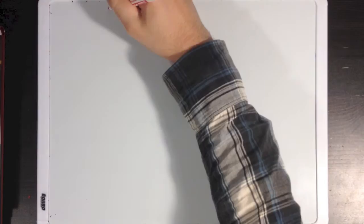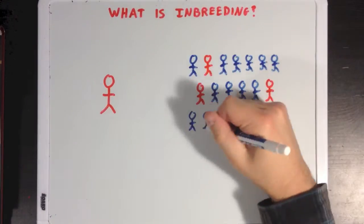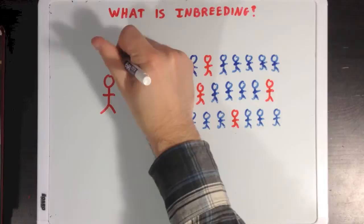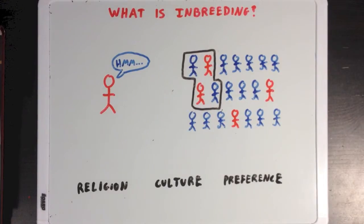So what is inbreeding exactly? Well, inbreeding is when people in a population will selectively have offspring with a certain smaller group within that larger population. And this can be for a bunch of reasons, like religion or culture, or maybe just because of preference.